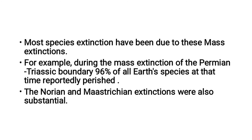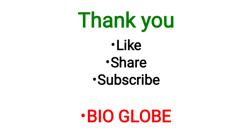Most species extinctions have been due to these mass extinctions. For example, during the mass extinction at the Permian-Triassic boundary, 96% of all Earth's species at that time reportedly perished. The Norian and Maastrichtian extinctions were also substantial. Thank you for watching this video. If you like this video, please share and subscribe.